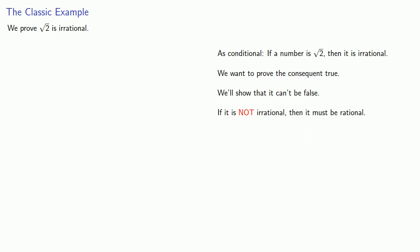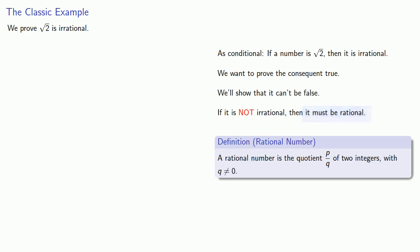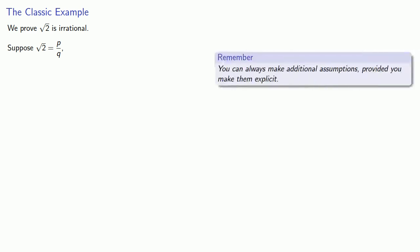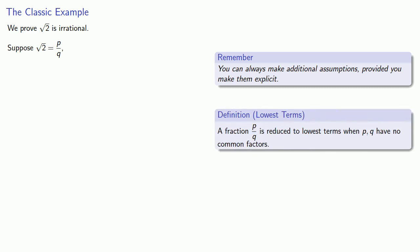Definitions are the whole of mathematics — all else is commentary. A rational number is the quotient p divided by q of two integers, with q not equal to 0. So the bus we'll get on is: suppose square root of 2 equals p divided by q. Now, a useful idea is that you can always make additional assumptions provided you make them explicit. When we write a fraction p divided by q, we might be able to reduce it. Reducing the fraction doesn't affect whether we have a rational number, so let's assume p divided by q is a fraction in lowest terms — meaning p and q have no common factors.